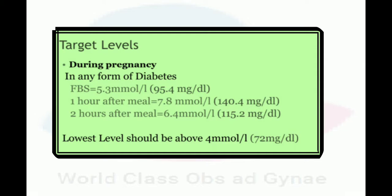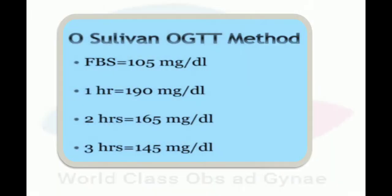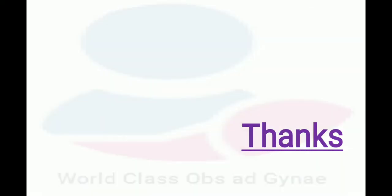One OGTT diagnostic method uses the following thresholds: fasting blood sugar 105 mg/dL, 1-hour blood sugar 190 mg/dL, 2-hour 165 mg/dL, 3-hour 145 mg/dL. These are important flashcards to remember related to the topic of diabetes mellitus in pregnancy.